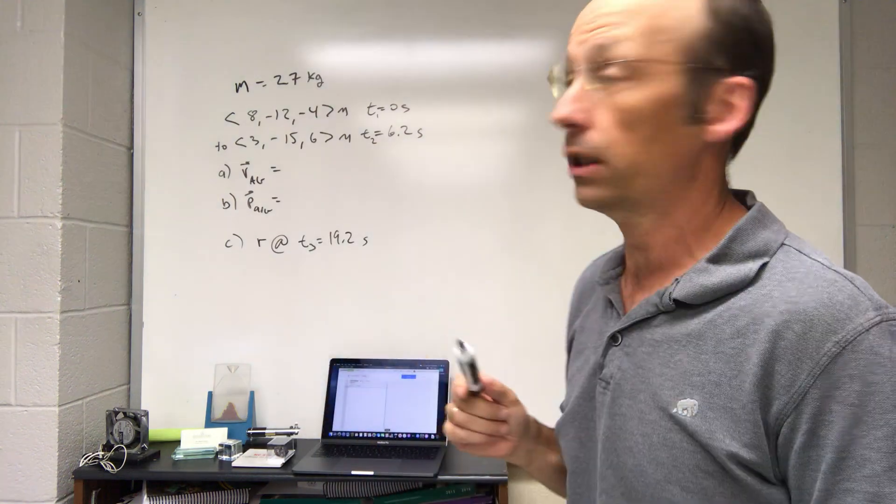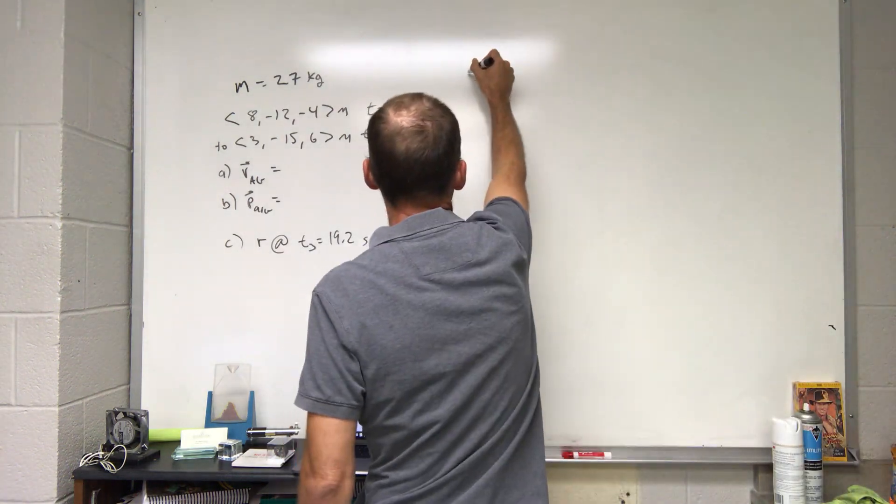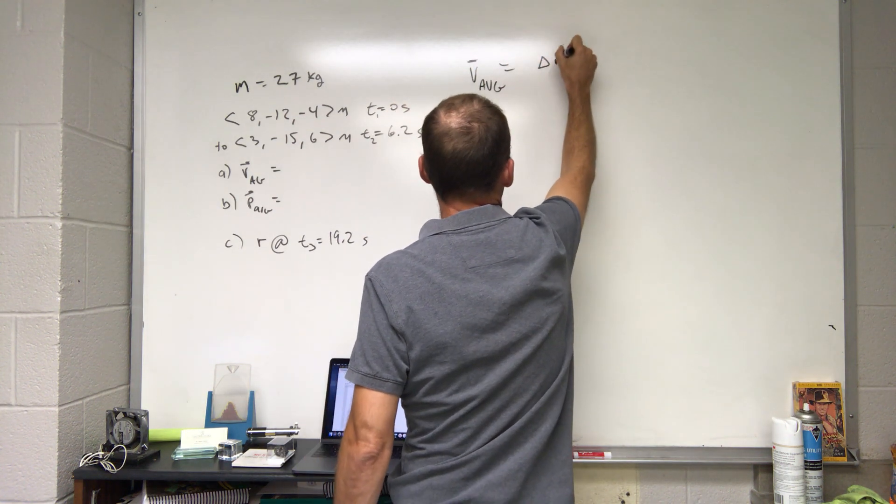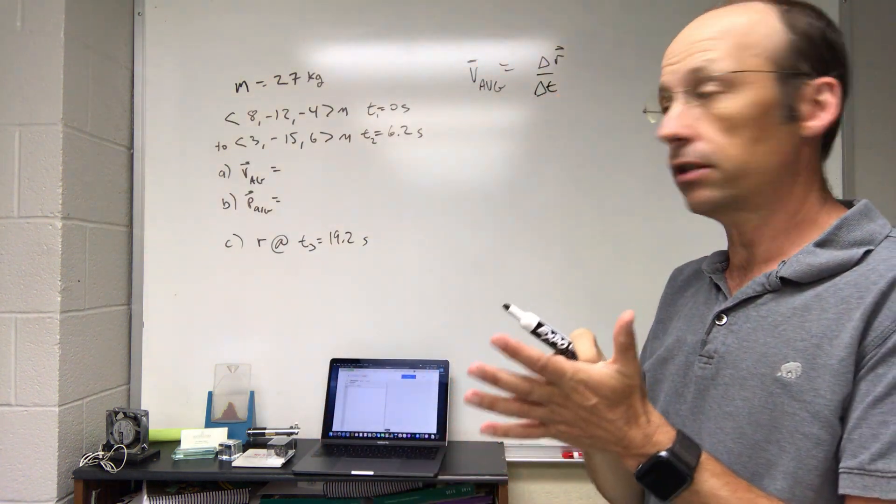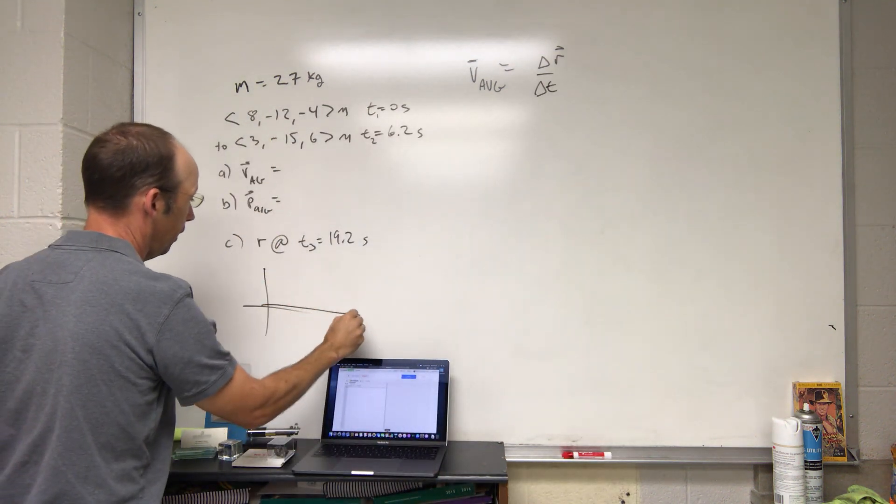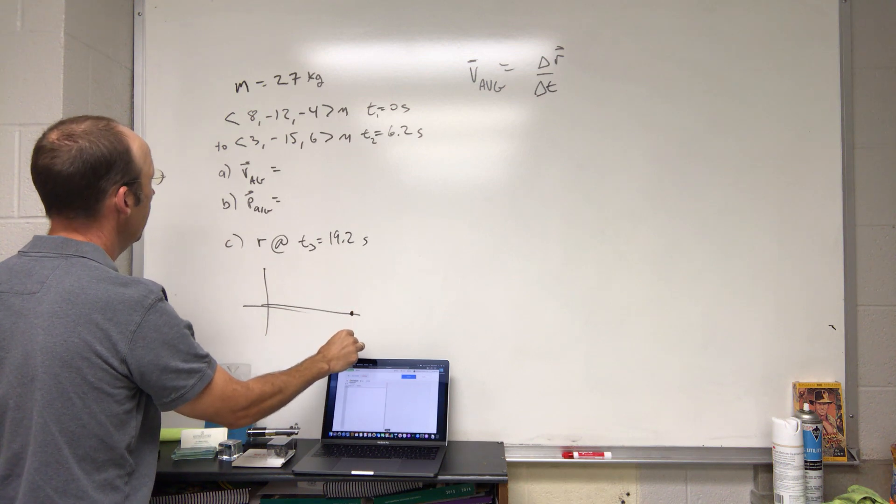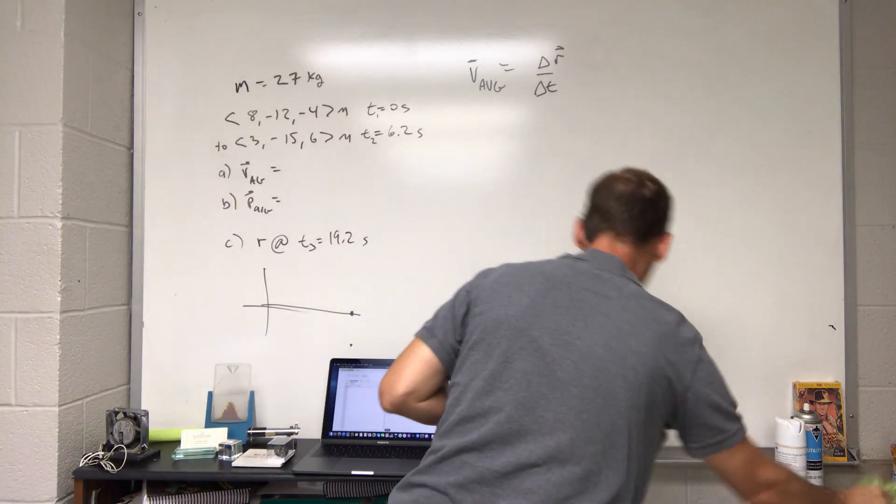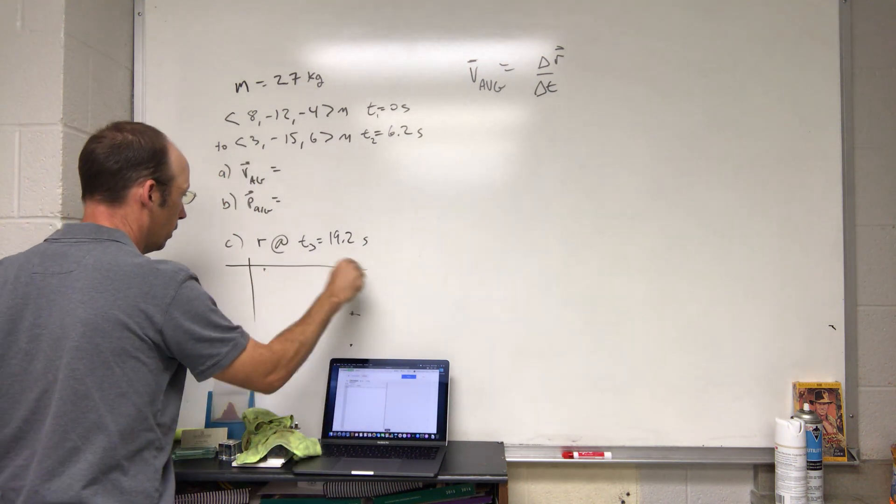So the first question is what's the average velocity. I'm going to start with average velocity equals delta r over delta t, the change in position over change in time. If you draw a picture, it starts over here at (8, -12), and then it moves to over here.